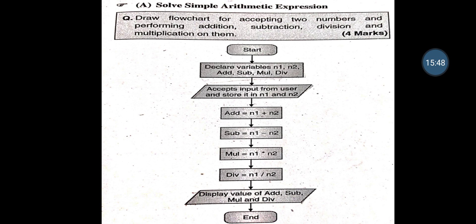Solve the Arithmetic Expression — the first algorithm represented as a flowchart. Start. Step 1: Start. Step 2: Declare variables Num1, Num2, Add, Subtraction, Multiplication and Division. Step 3: Read values — accept input from user and store in Num1 and Num2. Step 4: Add = Num1 + Num2; Subtraction = Num1 - Num2; Multiplication = Num1 * Num2; Division = Num1 / Num2. Then display the values of Addition, Subtraction, Multiplication and Division, then End. Ellipse shape is used for Start and End; rectangular shape for process; parallelogram for input and output.